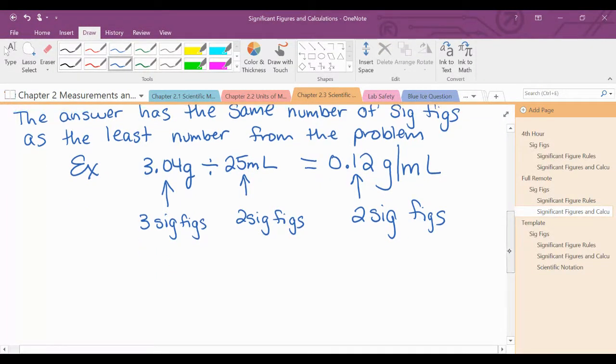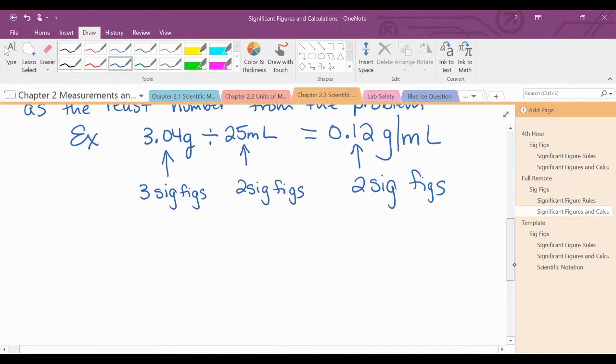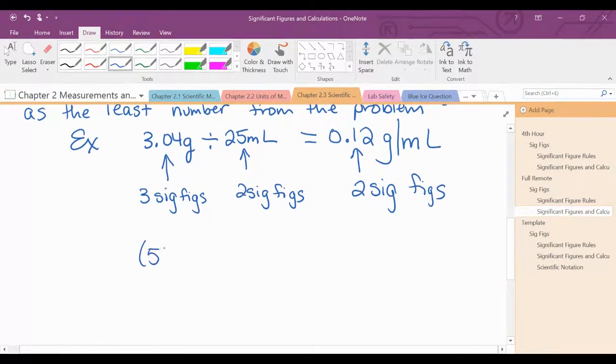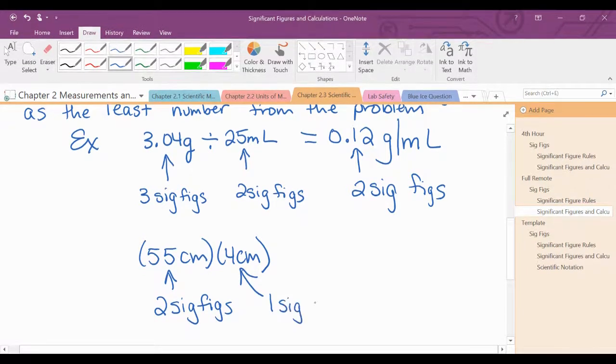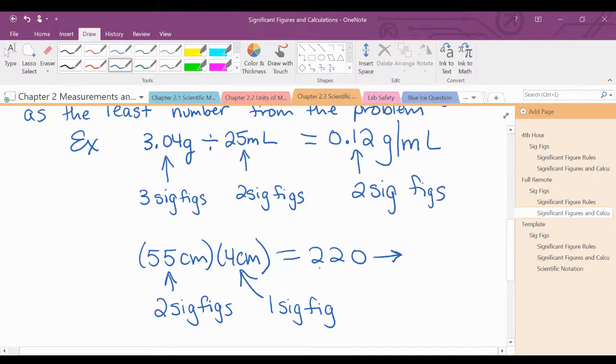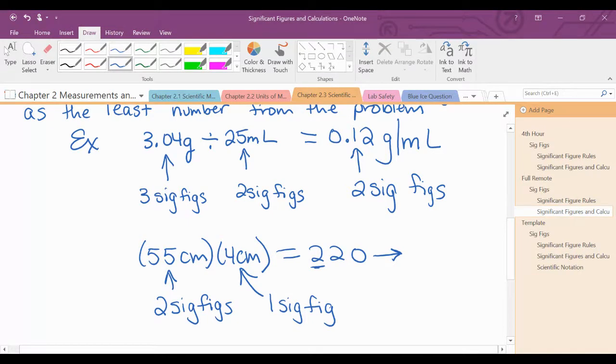Another example, we'll do another example with multiplying. So let's say I have 55 centimeters times 4 centimeters. This is 2 sig figs. So when I multiply, you would get 220, but that's 2 sig figs. So what I would have to round to, this is my last sig fig, this is going to round to 200.